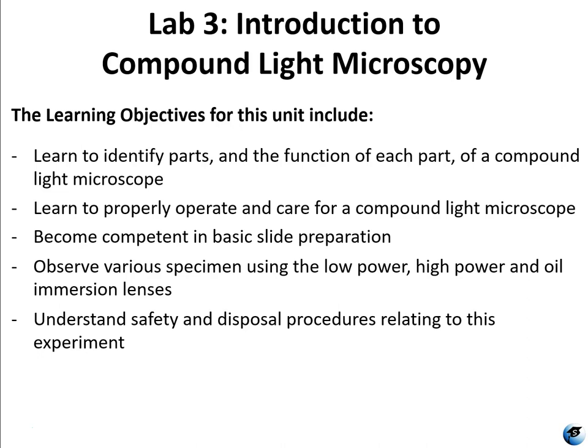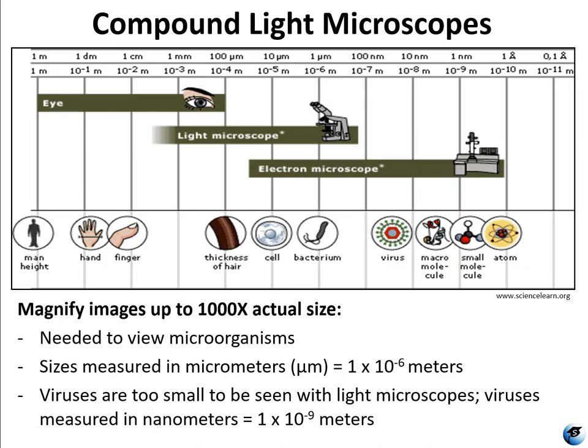The learning objectives for this unit include learning to identify the parts and function of each part of the compound light microscope, learning to properly operate and care for the compound light microscope, becoming competent in basic slide preparation skills, observing various specimens using low power, high power, and oil immersion lenses, and as always, understanding the safety and disposal procedures related to these experiments.